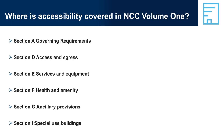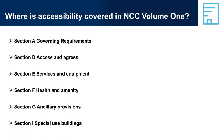Where is accessibility covered in NCC Volume 1? NCC Volume 1 contains a number of sections with requirements relevant to accessibility. Section D is relevant, but you need to look beyond this to identify provisions in other sections. For accessibility, there are a total of 10 performance requirements across Sections D, E, F and G; 4 verification methods across Sections D, E and F; 36 DTS provisions across Sections D, E, F, G and I; and 4 specifications across Sections D, E and F.